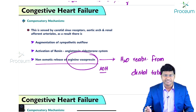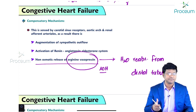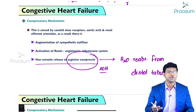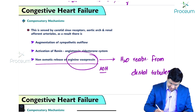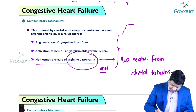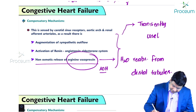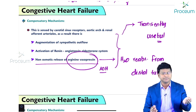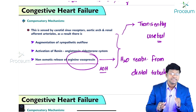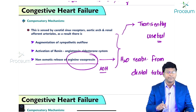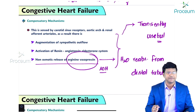These three compensatory mechanisms are: number one, augmentation of sympathetic outflow; number two, activation of the renin-angiotensin-aldosterone system; number three, non-osmotic release of arginine vasopressin. All three are transiently useful to the individual, but in the long term they precipitate heart failure.